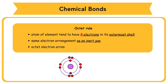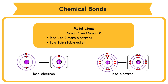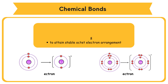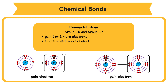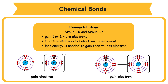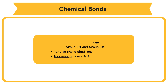An atom that has attained an octet electron arrangement is more chemically stable. Metal atoms from Groups 1 and 2 lose one or two electrons to attain a stable octet electron arrangement. Non-metal atoms from Groups 16 and 17 need one or two more electrons to attain an octet arrangement and tend to accept electrons, because the ionization energy to discharge six or seven valence electrons is much higher than the energy needed to pull electrons into the outermost shell. Non-metal atoms from Groups 14 and 15 tend to share electrons because less energy is needed.